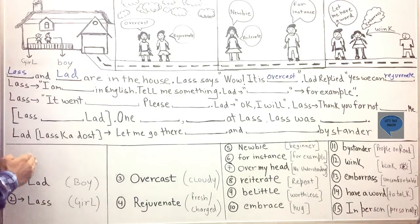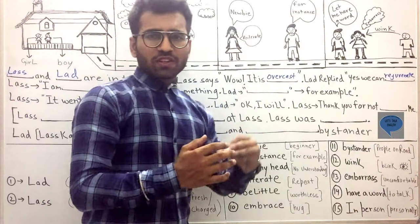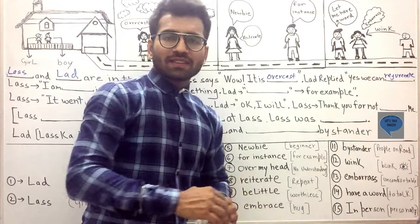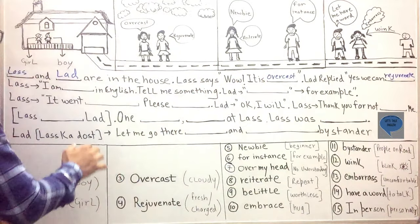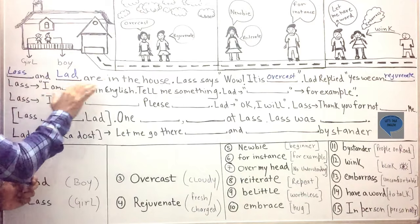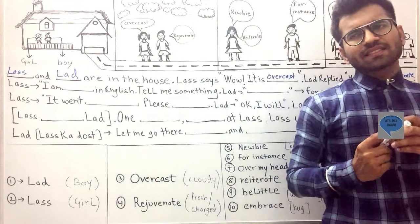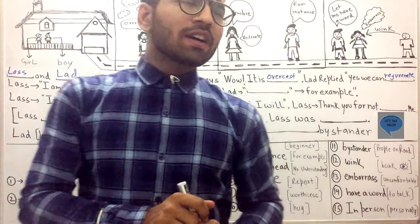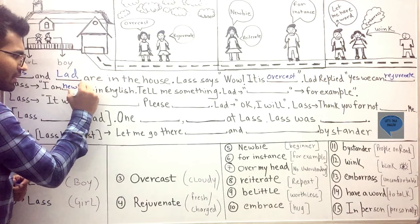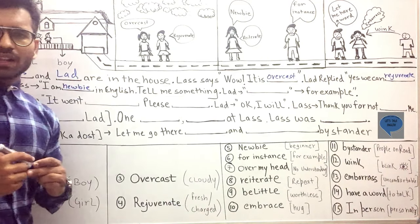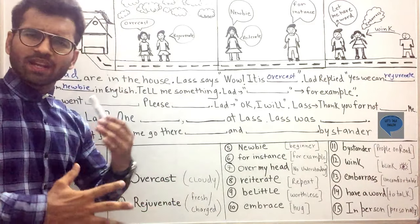Now in picture number three we will be able to learn all these ten words. How? You know what happened - these two people are having a conversation and lass said that I am new in English. Lass is saying to lad that she is a beginner, so the sense that comes is from newbie. I am newbie in English. Will you be able to tell me something about the English language or any vocabulary word or any phrase?